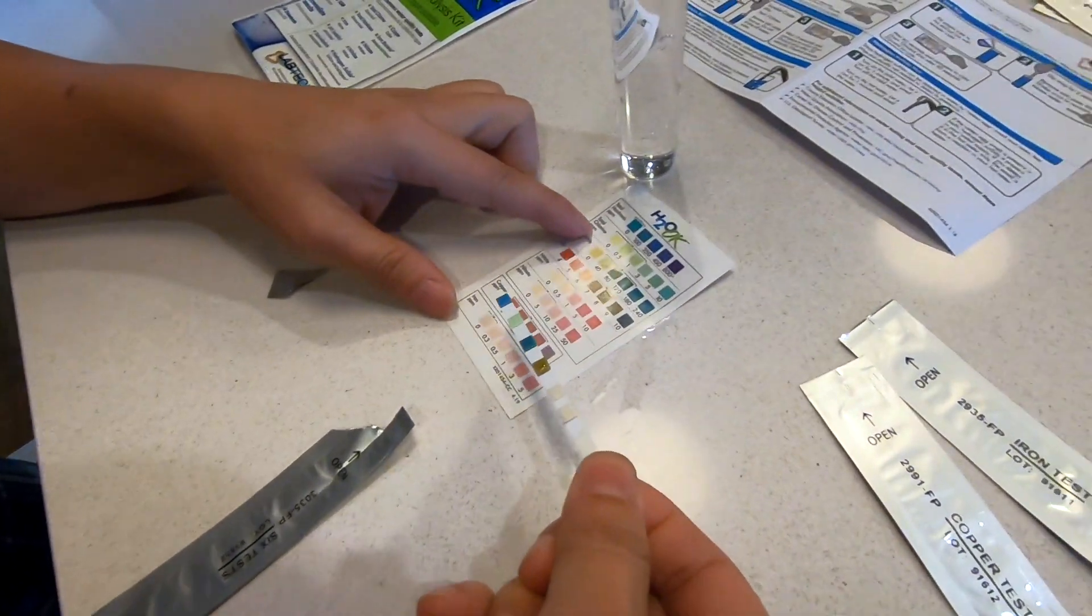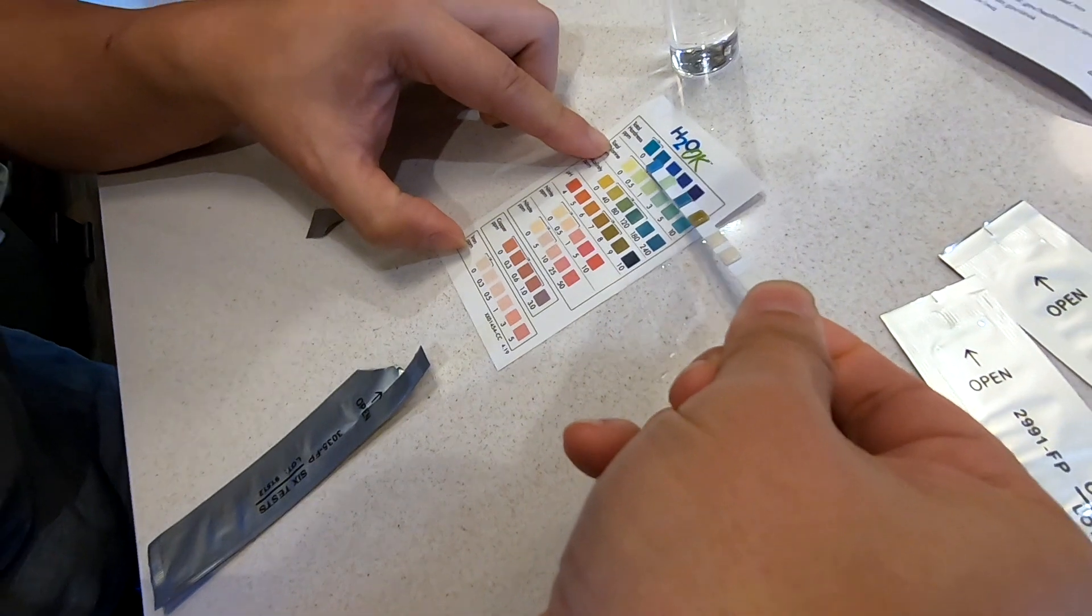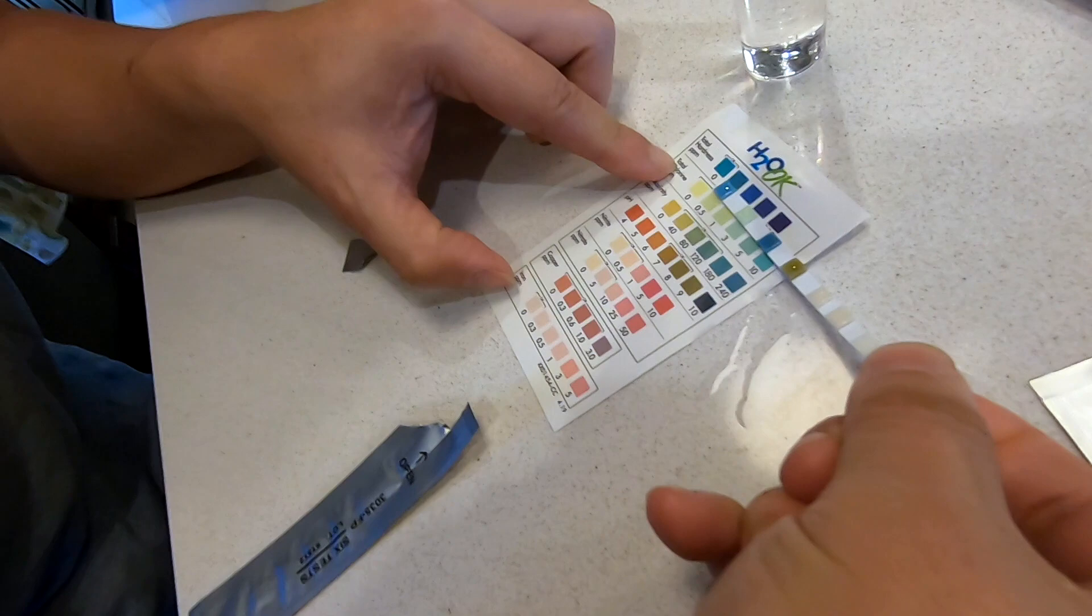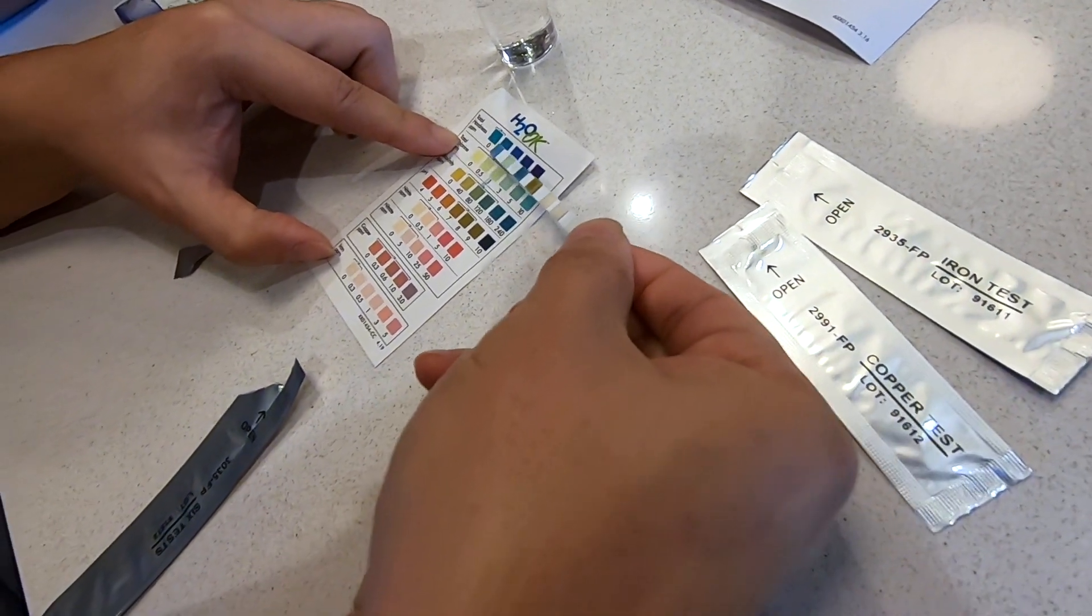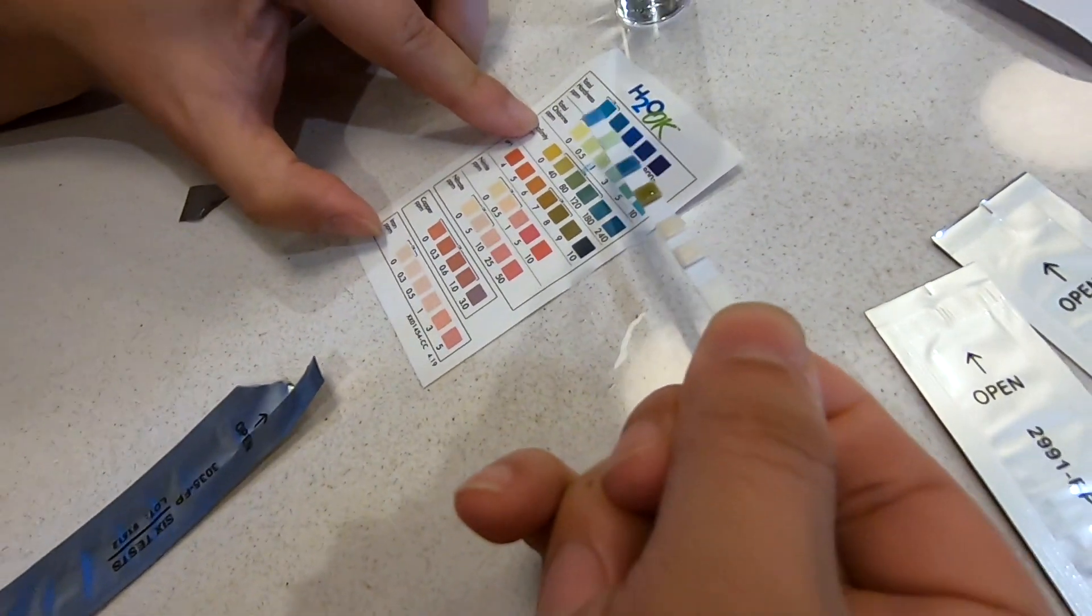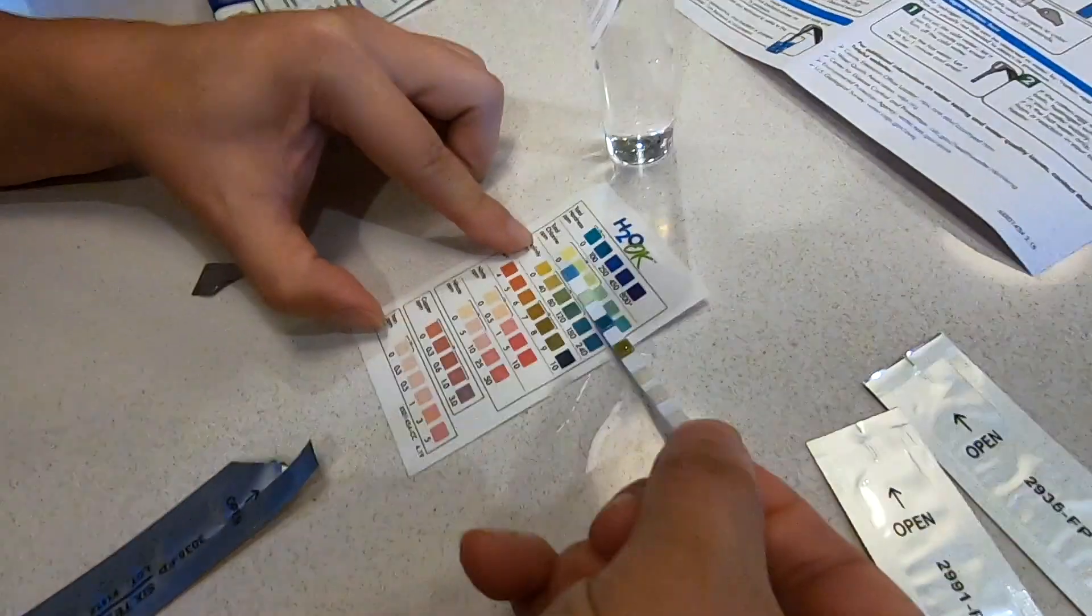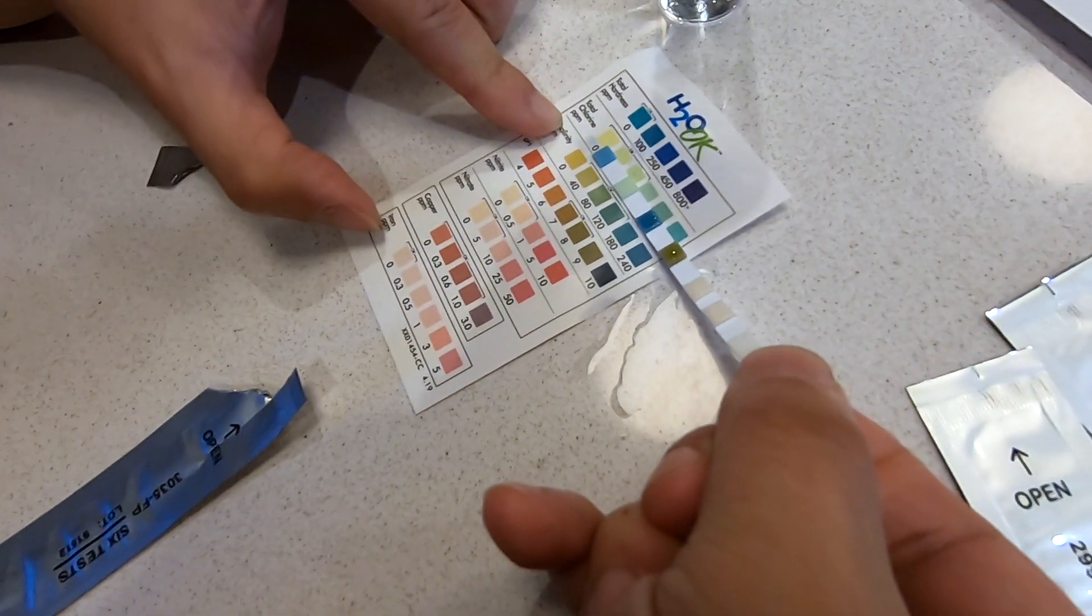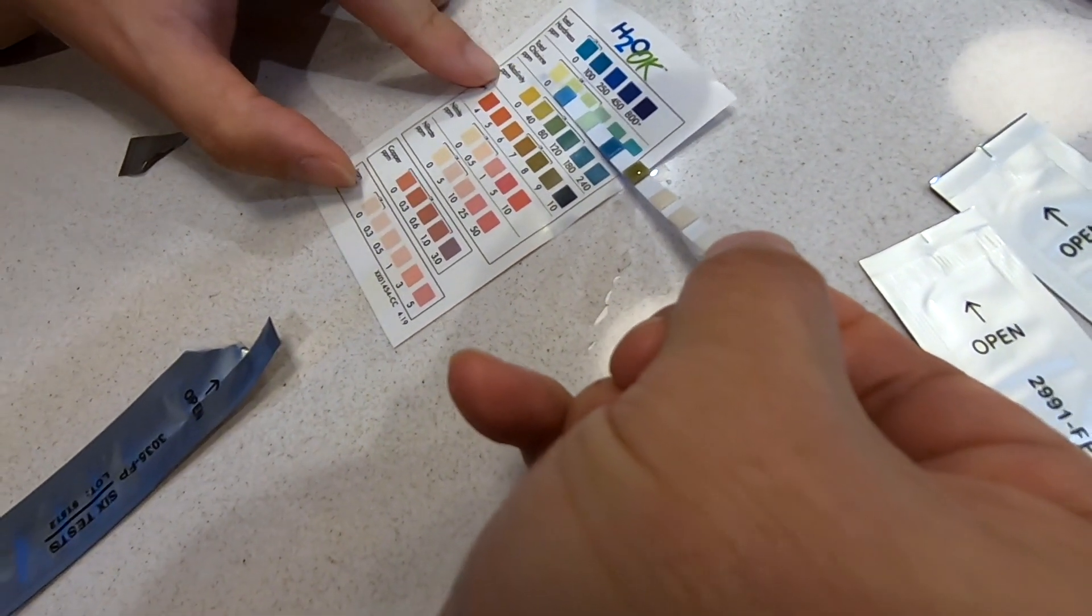For total hardness which is the first one, we are at about 100, slightly above. And for total chlorine, which is this one right here, we are slightly elevated also, somewhere around between this and this. We're slightly high too.